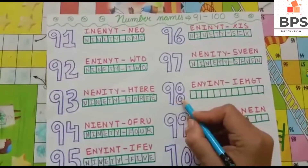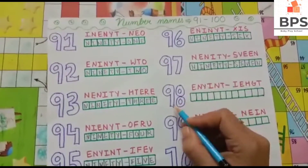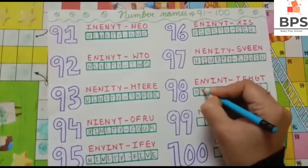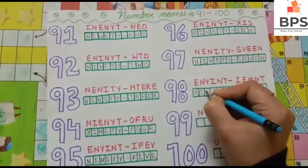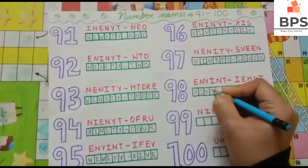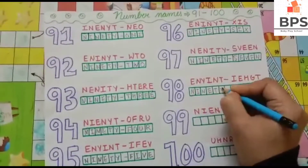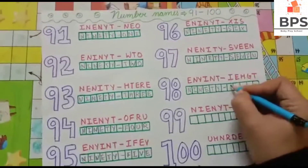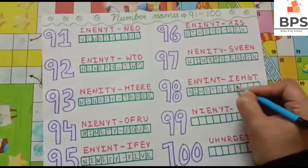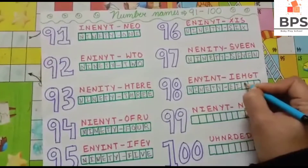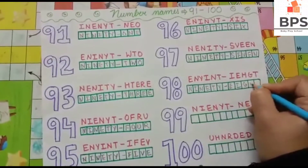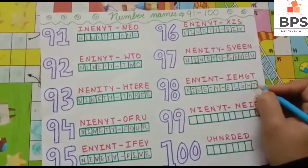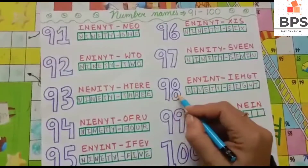9, 8, 98 — N-I-N-E-T-Y, 90, E-I-G-H-T, 8, so 98.